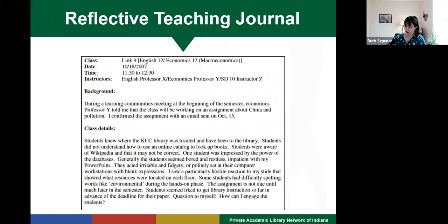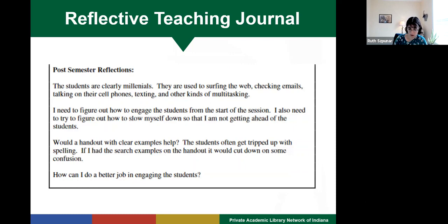Here's another example of a teaching journal, from an article by Elizabeth Tompkins. It's fairly similar to mine — she's got the class, date, time, instructors, all that logistical summary, a little background, and then uses the class details section to add reflection. You can see some description of the students, some hostile reactions, etc. The difference is that she adds a post-semester reflection. When you create a journal, you need to make sure you build in rules about when you'll look at it again — at the end of the semester, end of the year, or only before you return to a specific class. These are all valid ways to use your journal as long as you actually come back to what you wrote.